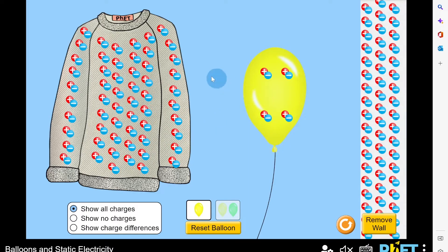So here we have a balloon with neutral charge and a jumper. We've also got a wall at the side. And what we can do is look at how the balloon is going to interact with the jumper and also with the wall.